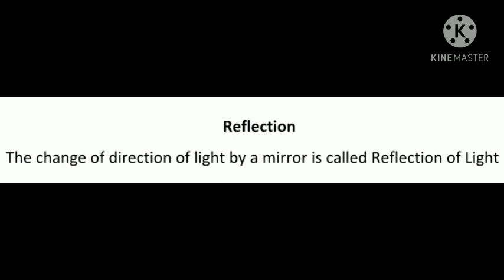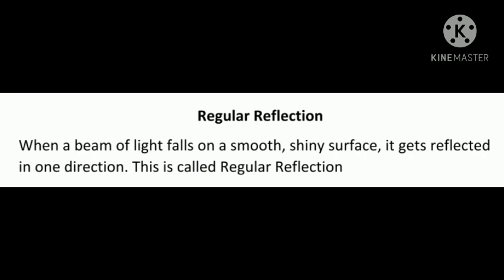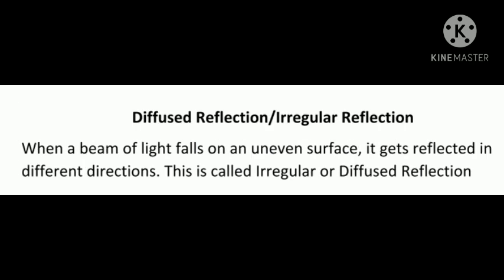In addition to being flat and smooth, a good reflecting surface must be shiny. Metal is a good reflector of light, but it is difficult to make its surface perfectly flat. A smooth, shiny surface is a good reflector of light as it reflects the entire beam of light falling on it in one direction only — this is called regular reflection. However, the surfaces of most objects around us are not so smooth. When the rays in a beam of light fall on an object with an uneven surface, they get reflected in different directions. This is called irregular or diffused reflection.